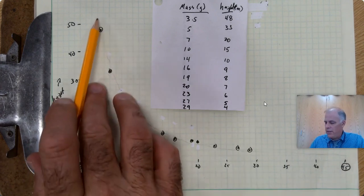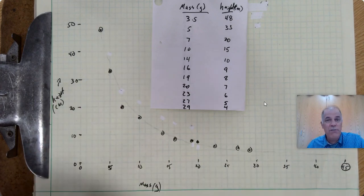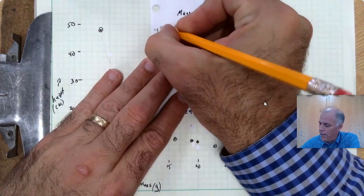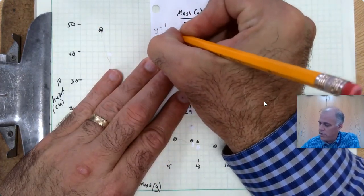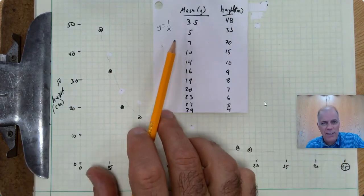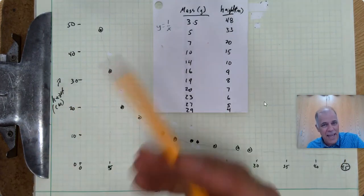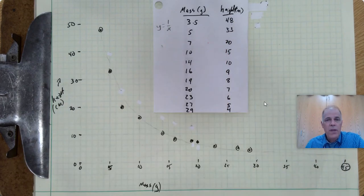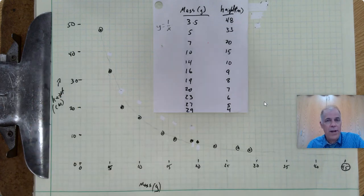We're working on the assumption here that this looks sort of like an inverse relationship. An inverse relationship is where y is equal to 1 over x. And even if that isn't exactly the relationship, it's kind of like it. And if we transform our data to fit this, then we may wind up with a straighter curve.